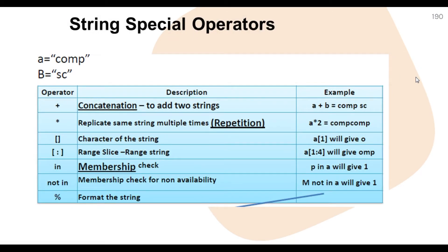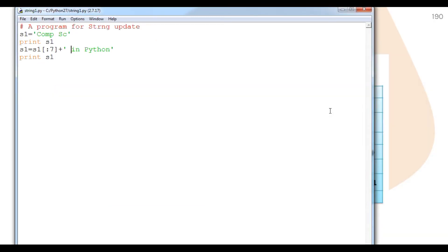Now we are going to understand the special operators. What are the special operators of a string? Suppose variable a equals 'comp' and b equals 'sc'. The concatenation operator is used to add two strings — not like arithmetic addition. So a plus b gives 'comp' plus 'sc', which results in 'compsc'. Note that in this case, no space will appear between them.